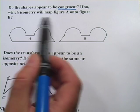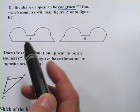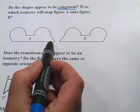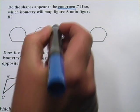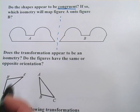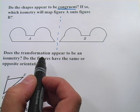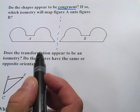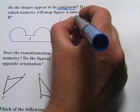It says, if so, which isometry will map figure A onto figure B? So the first question is, are these congruent? And just by looking at them, I would say yes. It appears that it's exactly the same shape. What it looks like is that it's just been reflected, it's been made into a mirror image. So in that case, the transformation that would map A onto B would be a reflection.